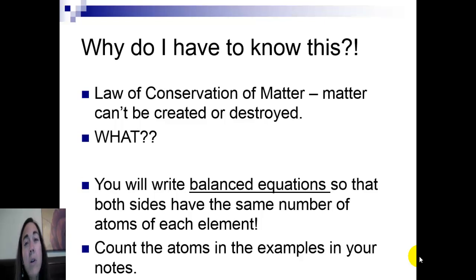The way that we're going to work around that is we are going to write balanced equations so that you have the same number of each atom of every element on both sides of the equation. That's going to be one of our goals in this unit. You don't know how to do that yet. What I want you to do now is to count the atoms that are in the examples that I gave you in your notes and see if you can see that they are not balanced the way that they're written. That will be a job for us to figure out in this unit.